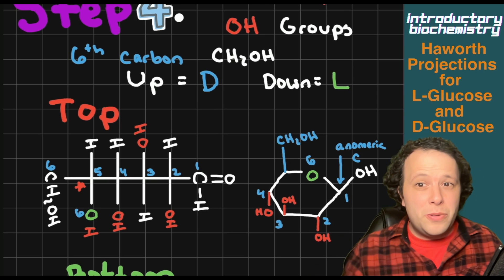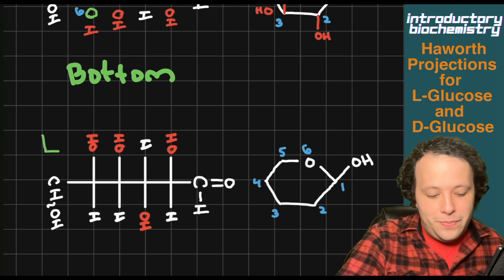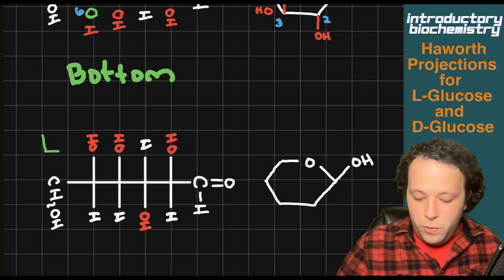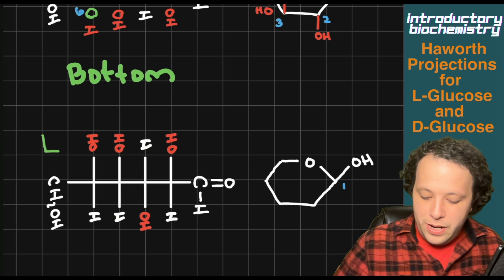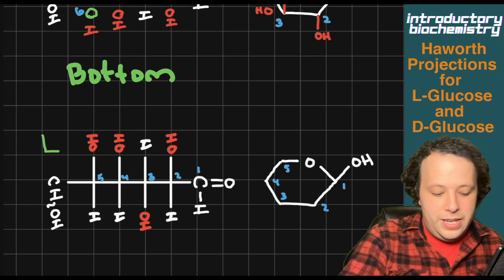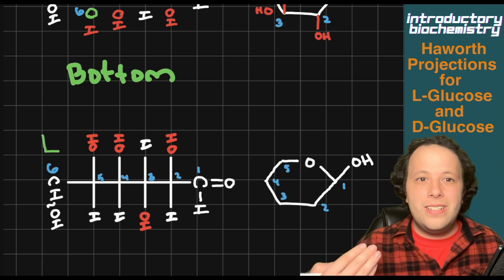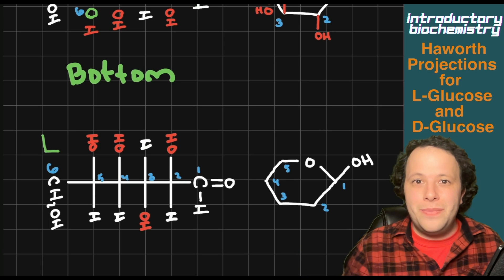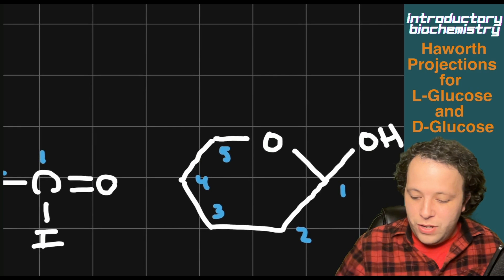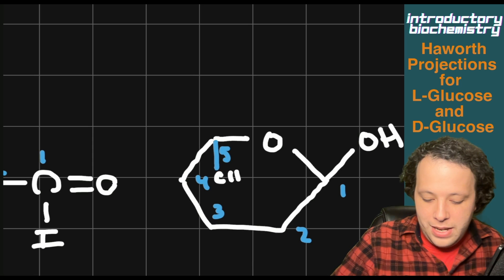Now what's the difference for the other structure, L? If we go to the structure for L glucose down here, being that it is L, the CH₂OH is this time going to be pointing down as a result. So in our structure we are going to have a CH₂OH pointing down, and we write it like so. So that's pointing down on carbon number five. Now for the other carbons, we're going to do the same thing — go through and number everything officially since we already know our ring size: one, two, three, four, five, and then carbon number six.